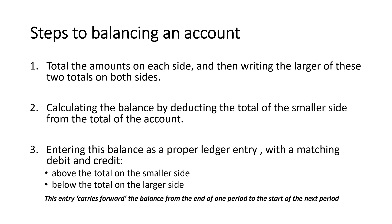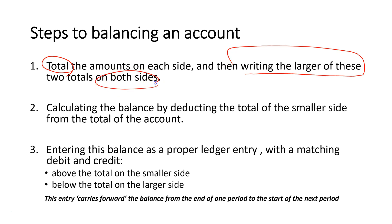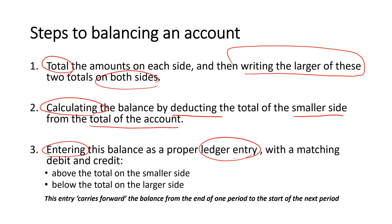There are three steps to balancing an account. The first thing we have to do is total the amounts on each side and then write the larger of these on both sides. The second thing we have to do is calculate the balance — deduct the smaller side from the total. The last thing we do is enter the balance as a ledger entry, and that means it has a matching debit and credit.